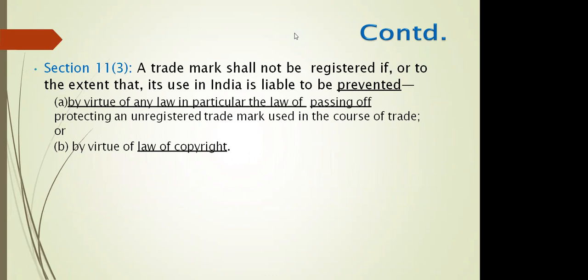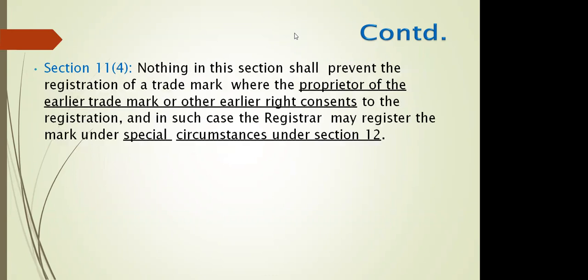A trademark can also not be registered if, by virtue of any law, it is being used as passing off an unregistered trademark used in the course of trade, or by virtue of the law of copyright. When something is already covered under copyright, it cannot be registered as a trademark. Trademark is a different kind of intellectual property; copyright is for all kinds of creative creations such as art, culture, writing, and singing. Under Section 11(4), nothing in the section shall prevent the registration of a trademark where the proprietor consents to registration, and the Registrar may register the mark under special circumstances under Section 12.